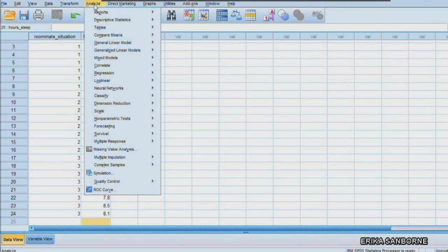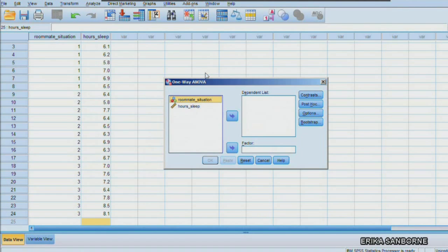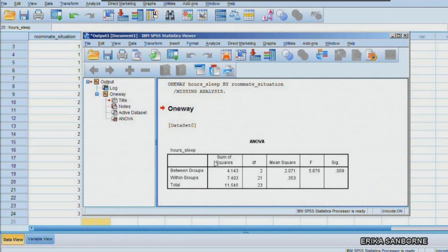To run the test, I'm just going to go to Analyze, Compare Means, One Way ANOVA, and I have my two variables. I need to move the dependent variable over to the dependent list, and move the factor over to the box that says factor, and click OK.